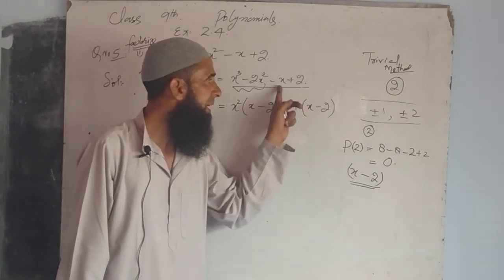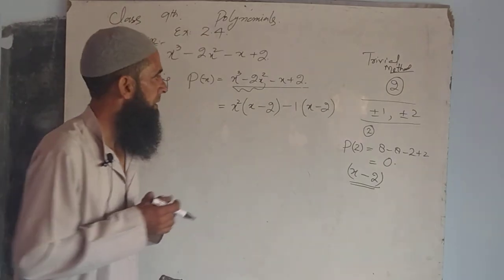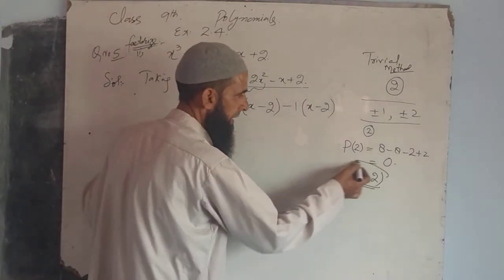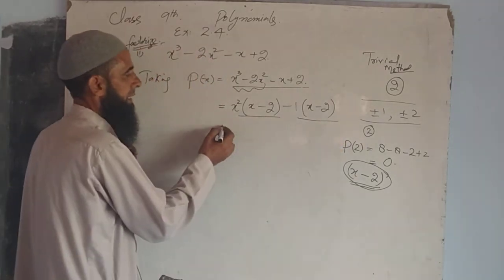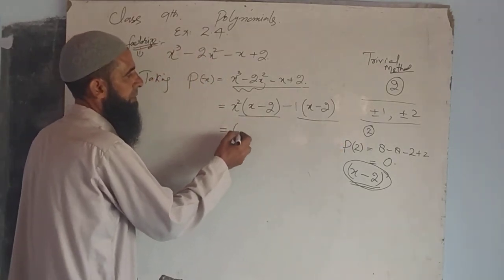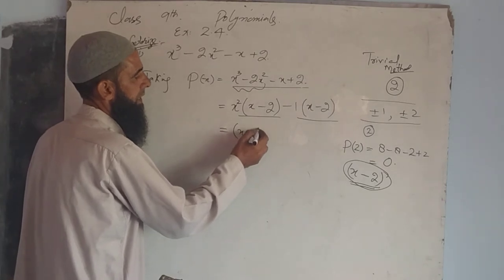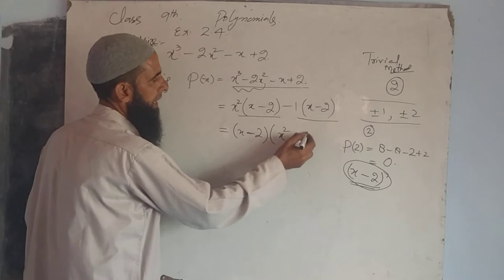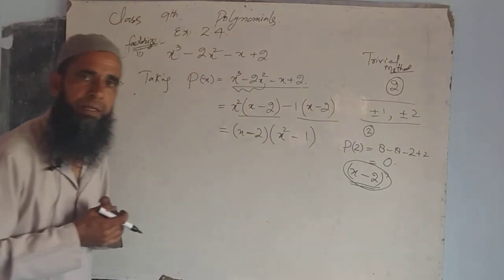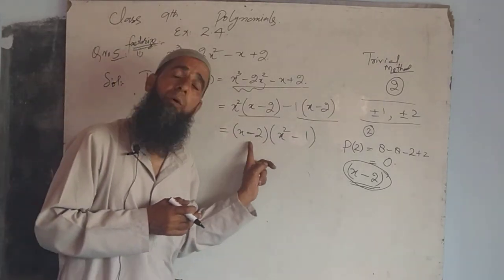It is the same as the above polynomial. Now we have clearly x minus 2 as a factor. This will come out common from both. We get x minus 2 times (x² minus 1). This is a linear factor and a quadratic factor.